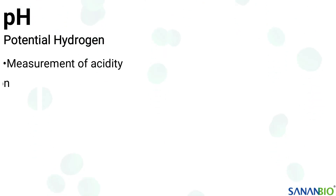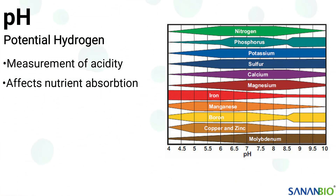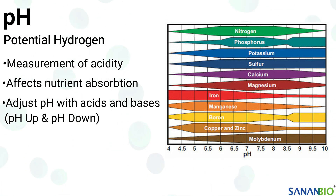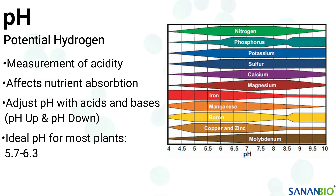The acidity of water also affects the plant's ability to absorb nutrients. The measurement of acidity used in hydroponics is pH, potential hydrogen. You can apply acids and bases via products such as pH up and pH down to adjust the pH to the ideal range of 5.7 to 6.3 where all essential nutrients are available to the plants.